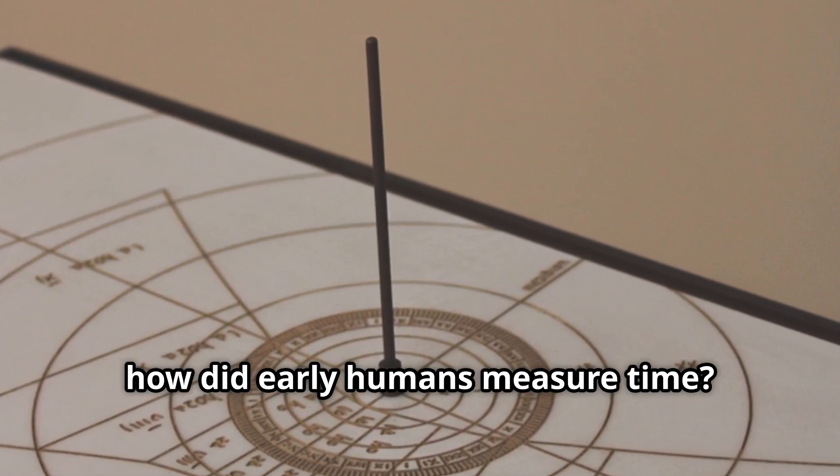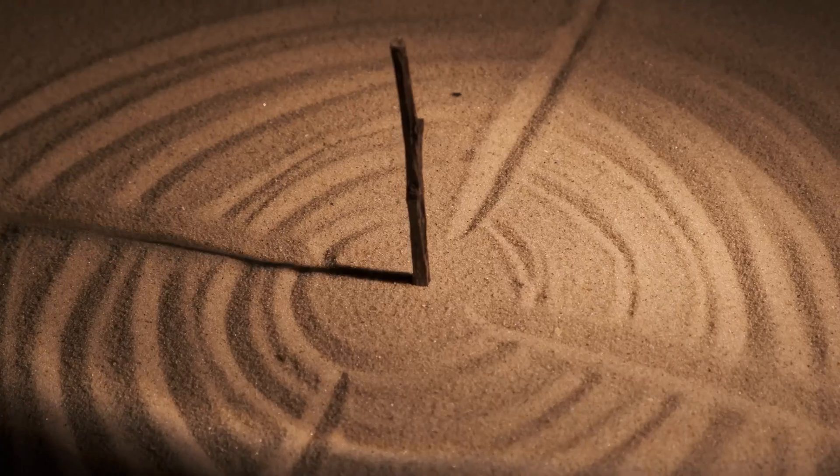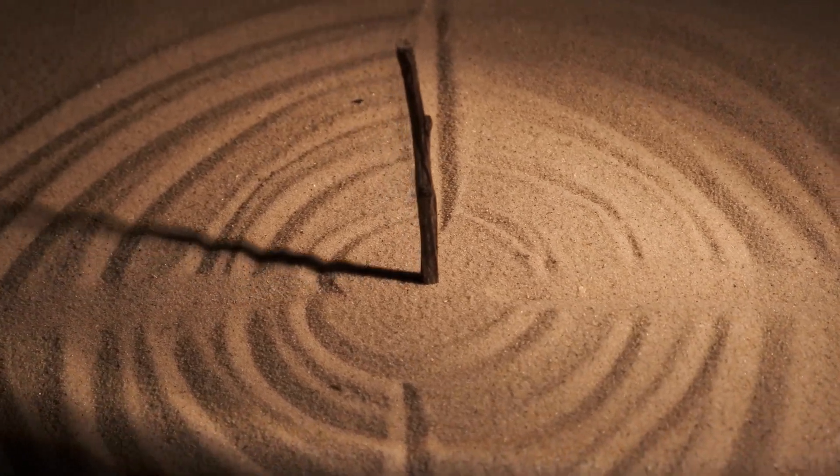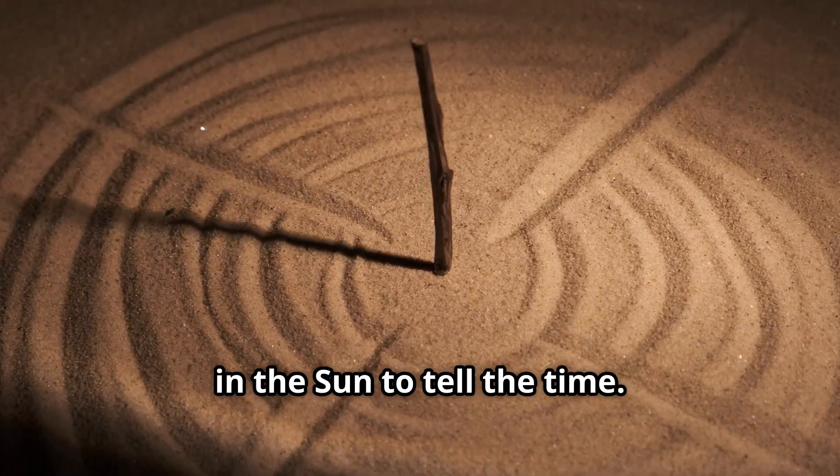So, how did early humans measure time? That's a really interesting question. Let's dive into some fascinating history to find out. Long before electric clocks, early humans used the shadows of objects in the sun to tell the time.